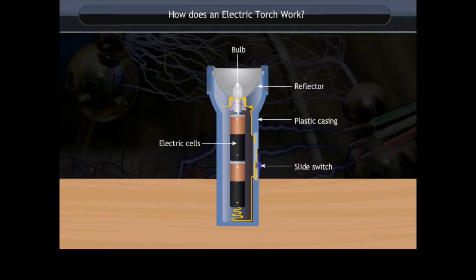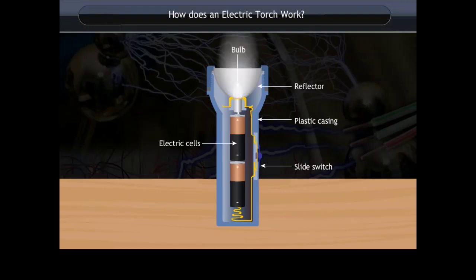The spring of the torch is connected to the negative terminal of the second cell. The negative terminal of the first cell is connected to the positive terminal of the second cell. In the torch, closing the switch completes the circuit and allows current to flow, and thus the bulb glows.